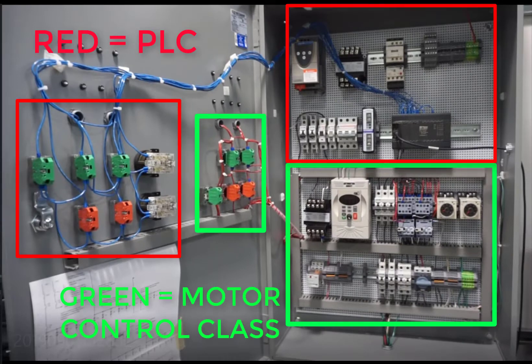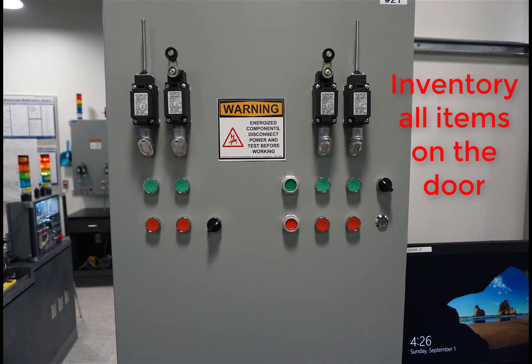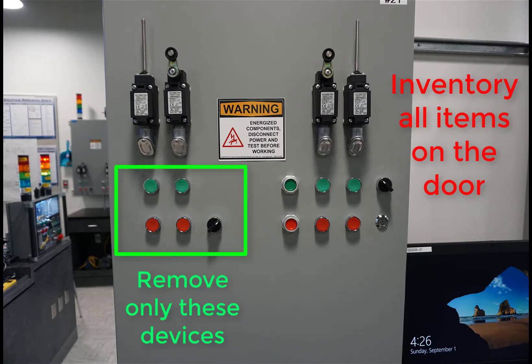Inside, areas in red are reserved for the PLC and the green areas are for your motor control class. On the front, you'll inventory everything and remove these items that are inside the green box.